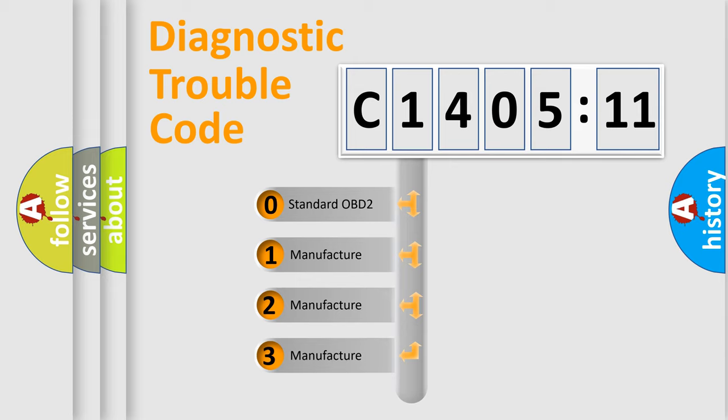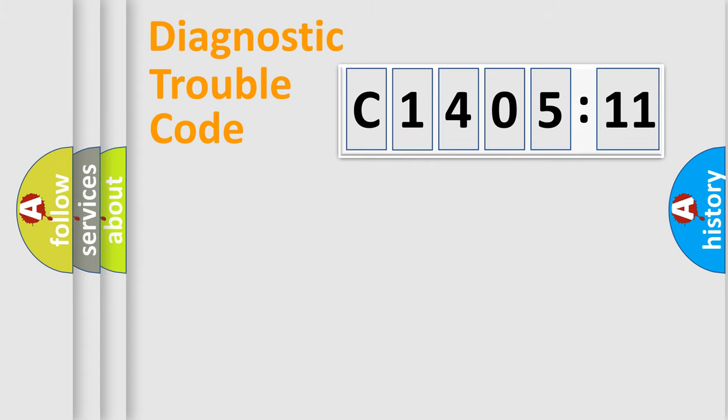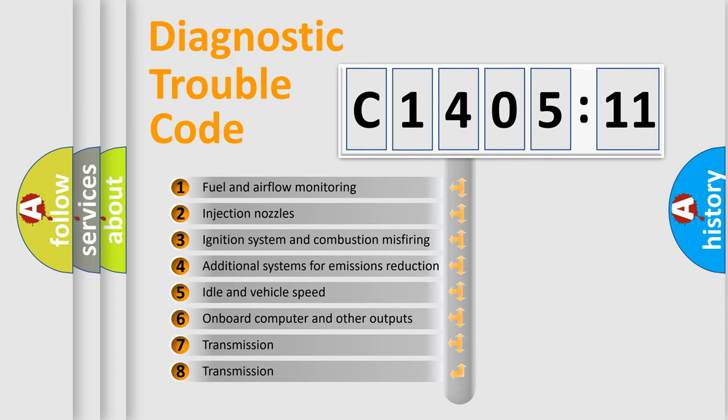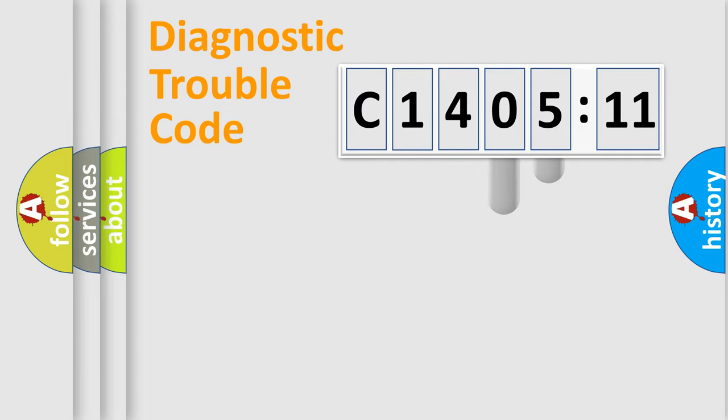If the second character is expressed as zero, it is a standardized error. In the case of numbers 1, 2, 3, it is a more prestigious expression of the car-specific error. The third character specifies a subset of errors. The distribution shown is valid only for the standardized DTC code.